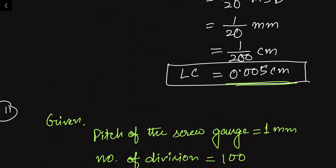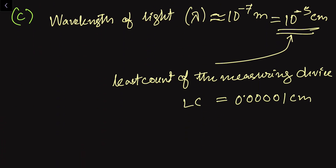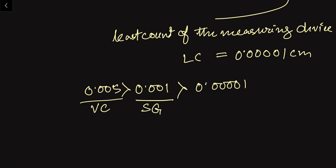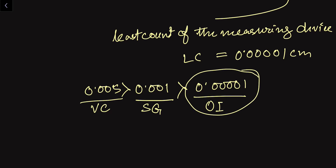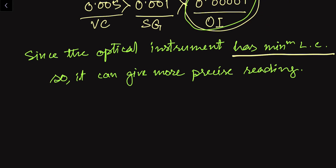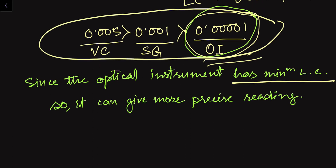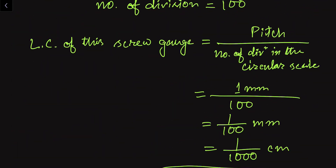Now comparing the least counts: 0.005 cm for the vernier calipers, 0.001 cm for the screw gauge, and 0.00001 cm for the optical instrument. We can see that 0.005 > 0.001 > 0.00001. The optical instrument has the lowest least count, so it can give the most precise reading. Therefore, the optical instrument is the most precise device.